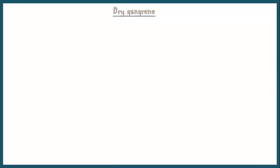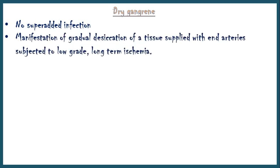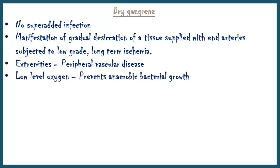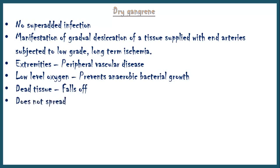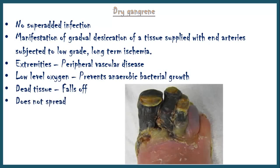Dry gangrene is different from wet gangrene — there is no super-added infection. It develops as a manifestation of gradual desiccation of tissue supplied with end arteries, subjected to low-grade ischemia over a long period of time. Most commonly occurs in extremities of patients with long-standing peripheral vascular disease. The presence of low oxygen levels in tissue prevents anaerobic bacterial growth. The dead tissue ultimately falls off and does not spread. This is not a medical emergency like wet gangrene.